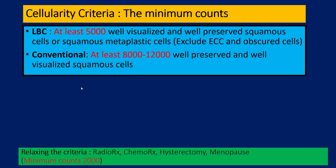Regarding cellularity, this refers to squamous cells only. In liquid-based cytology preparations, there should be at least 5,000 well-visualized and well-preserved squamous or squamous metaplastic cells, excluding endocervical cells and obscured cells. In conventional smears, it should be at least 8,000. Bethesda states 8,000 to 12,000, but I would say it is better to stick to a figure of either 8,000 or 12,000 rather than using a range.